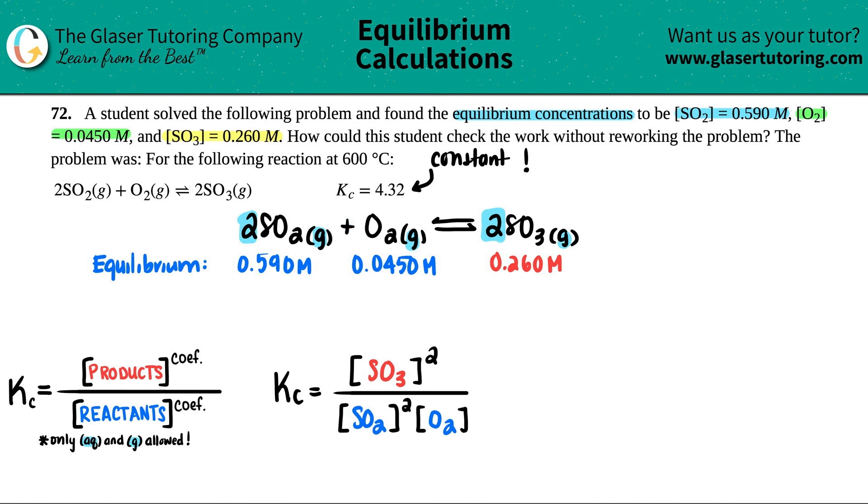Now we're just going to plug in the values. They did say that this was 0.260, and this one was 0.590, and this was 0.0450. So we could just solve for the Kc.